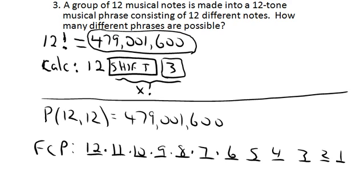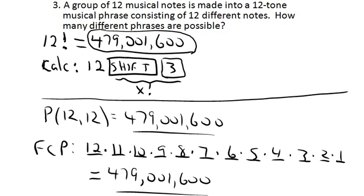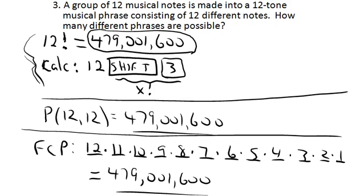Again, it's very nice to be able to recognize that as 12 factorial, so you don't have to type in each of those numbers with multiplication symbol between them. But if you did, you would get, again, 479 million, 1,600 ways. So, two alternate ways to do it, but again, using the factorial is certainly the easiest and most straightforward.